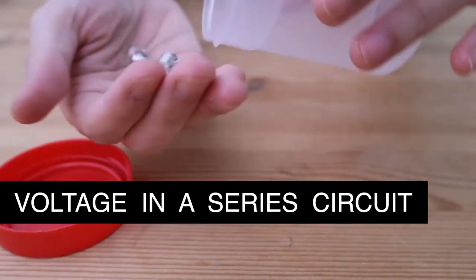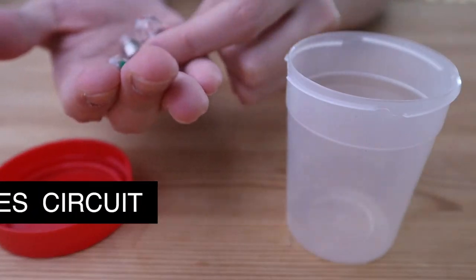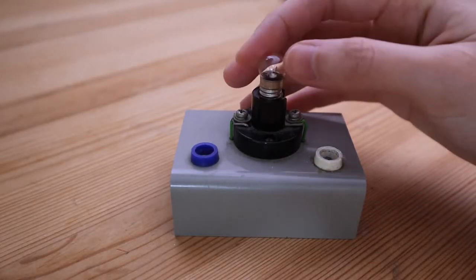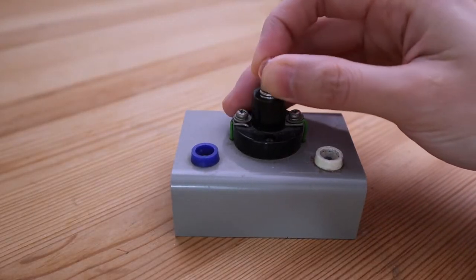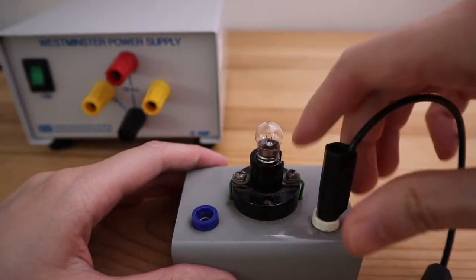To determine how voltage behaves in a series circuit, we need to use two identical light bulbs. Connect one of the bulbs in series with a power supply or a battery.